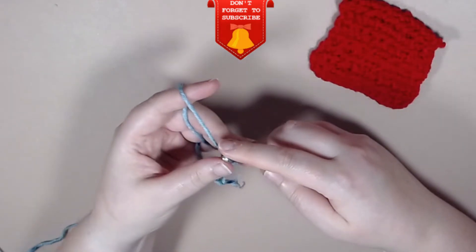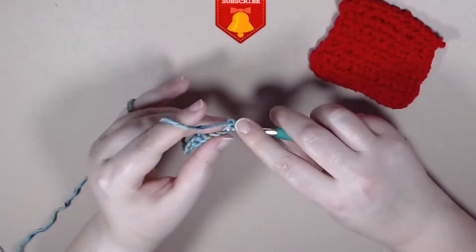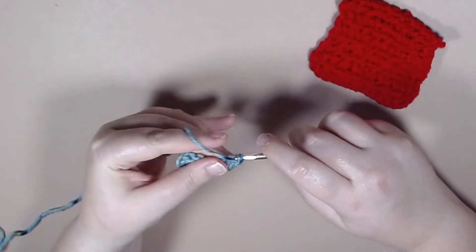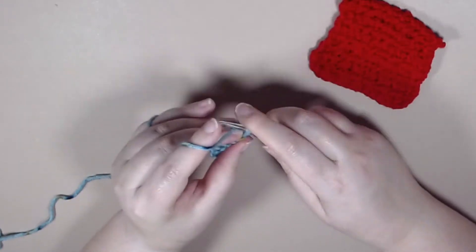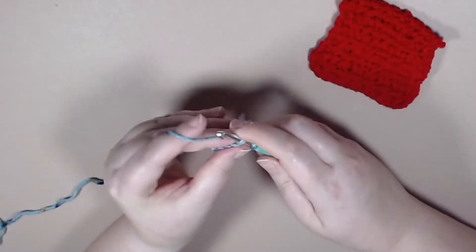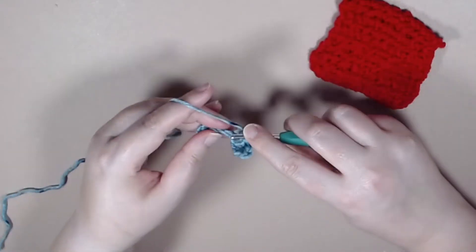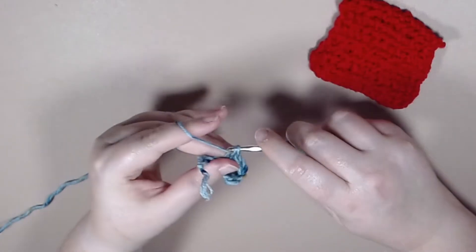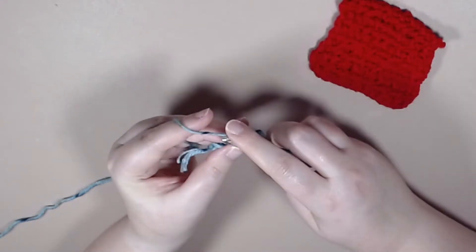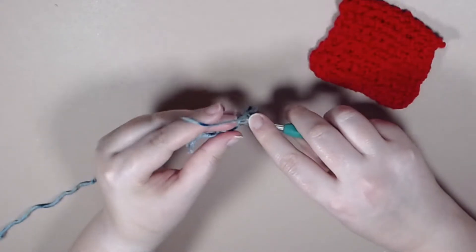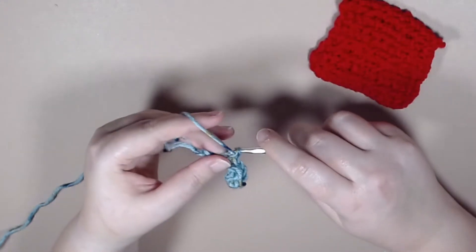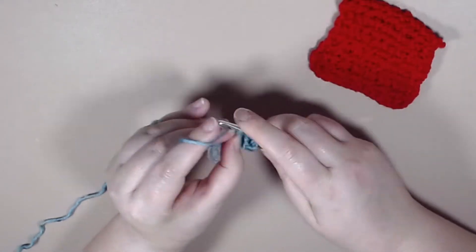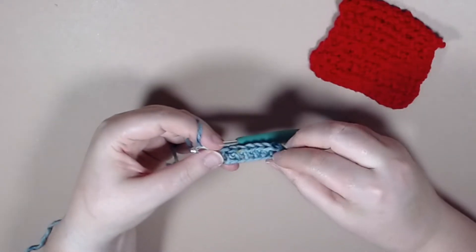To start off for row one you want to chain one and you want a single crochet all the way to the end of the row. Alright row one is done.